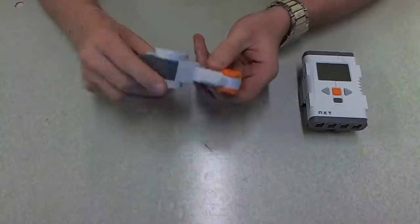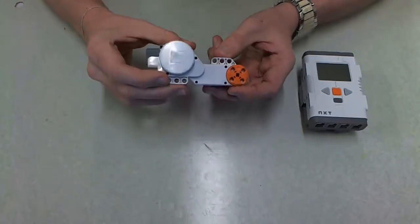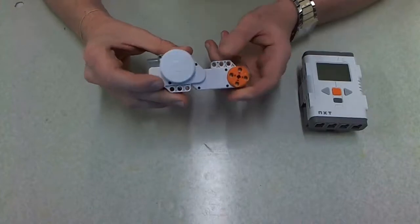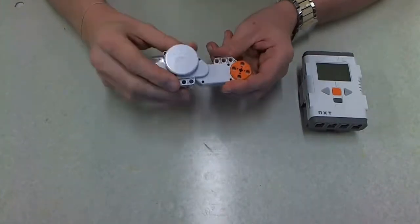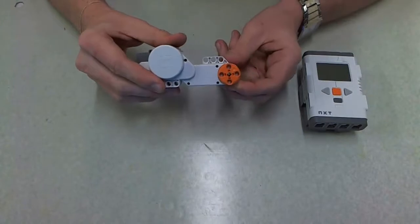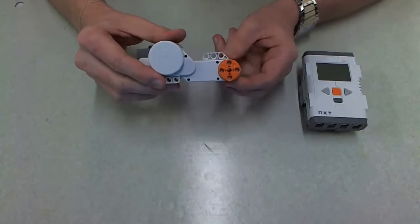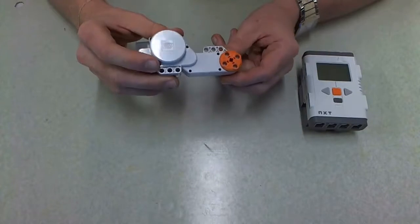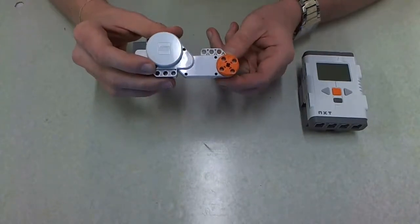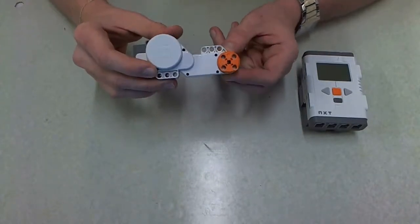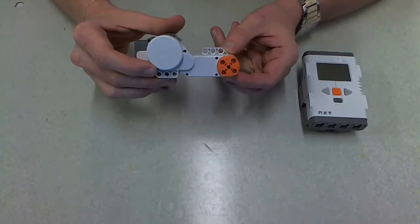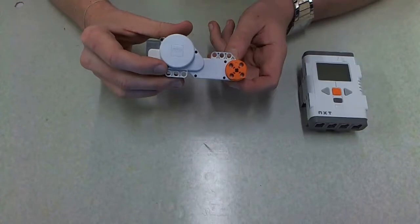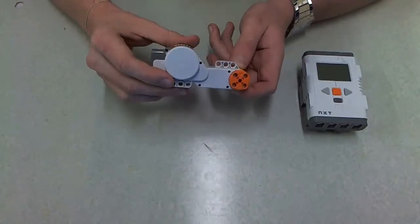Secondly, motors. These are the motors that you guys will be using in the prac. They have built-in encoders, 360 degrees, so they've got 360 counts per revolution. One thing to note with these motors is that there is a bit of slop in the motor when it's stationary. So when your robot moves, it could end up two or three degrees out due to that slop.